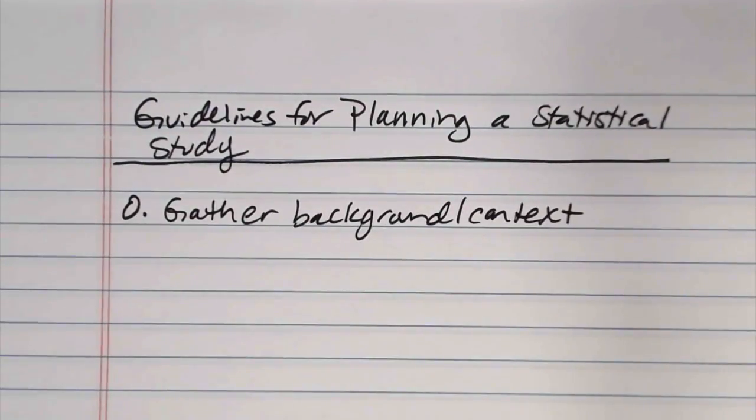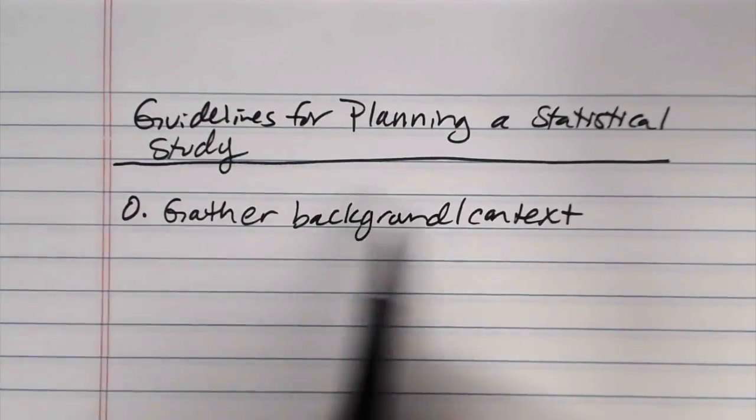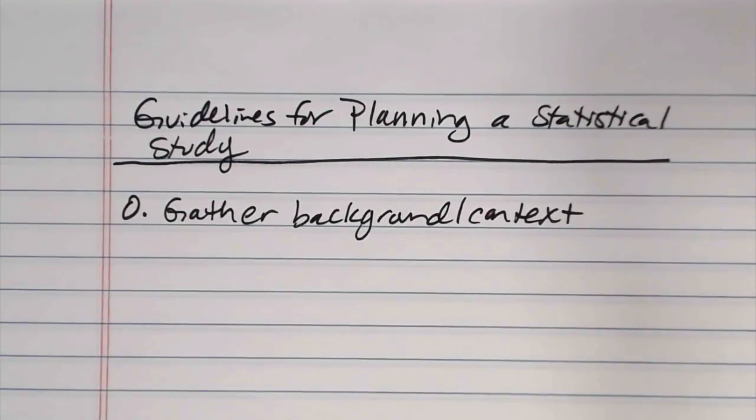Until you have a really firm grasp of what it is that you're trying to study and the work that other people have already done in that field, it makes it really difficult to plan a statistical study that doesn't repeat some of the pitfalls of previous experiments or doesn't build on knowledge that's already out there. So I think that piece is really key, gathering background and context.